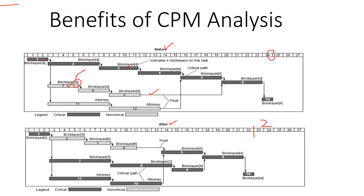In the revised schedule, you can see we have six bricklayers on activity two and two bricklayers remaining on activity seven. Likewise, two resources have been moved from activity eight to activity three — you can see the impact with six bricklayers now deployed on activity three, whereas only two are currently working on activity eight. A similar redeployment occurs with resources moved from activity nine to activity four.